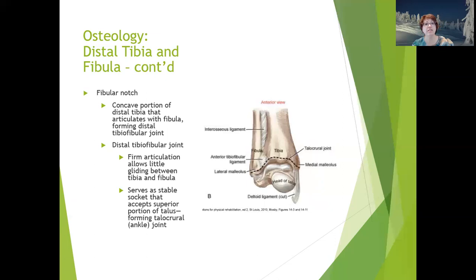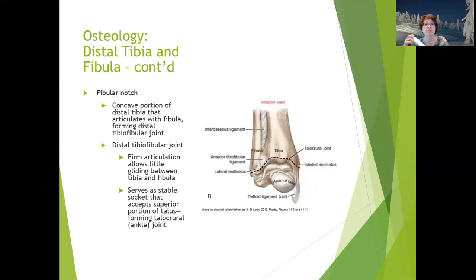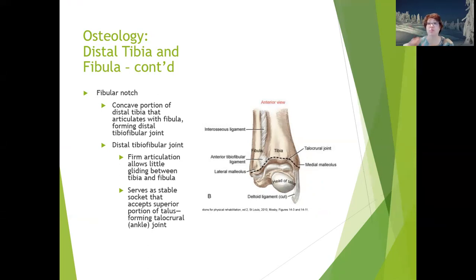The malleoli are super important functionally because of their location and the tendons that encircle them. The fibular notch is the concave portion of the distal tibia that articulates with the fibula, forming the distal tibiofibular joint. This is a firm articulation that allows very little gliding, keeping the mortise and tenon joint tight so that the tibia and fibula together form a stable socket accepting the superior portion of the talus — forming the talocrural joint, the name for the ankle.